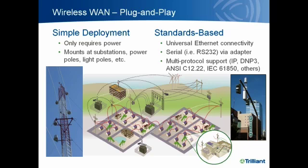Deploying a wireless WAN provides Ethernet connectivity for universal connections to devices like network cameras or grid devices, RTUs and IEDs for SCADA. It can provide serial connectivity through an adapter to connect legacy applications, and has a whole protocol soup of support for legacy and future applications.